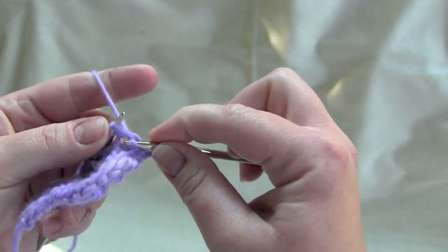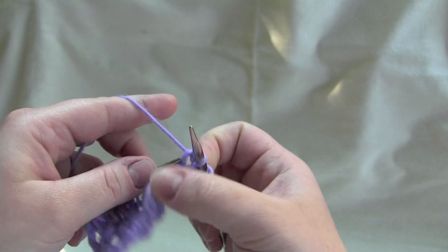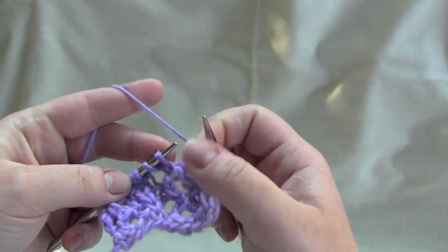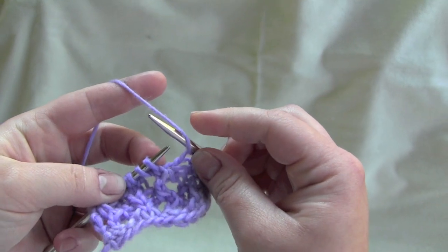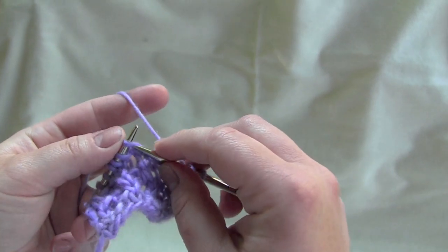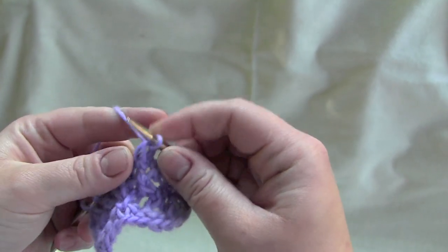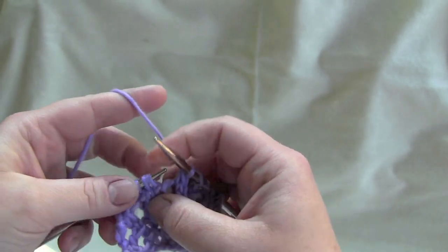and then purl one, yarn over, slip slip knit, and that's your repeat.